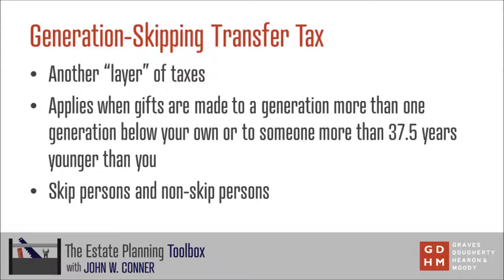Continuing on with our discussion of the generation-skipping transfer tax, the important thing to understand is that it is another layer of tax on top of the estate and gift tax. But it's only going to apply to gifts made to individuals, or in some cases to a trust benefiting those individuals, who are more than one generation below your own, or to someone who is more than 37 and one half years younger than you. Typically, this would mean grandchildren or great-grandchildren, but it does not necessarily have to be a grandchild or great-grandchild given that 37 and a half year age gap.